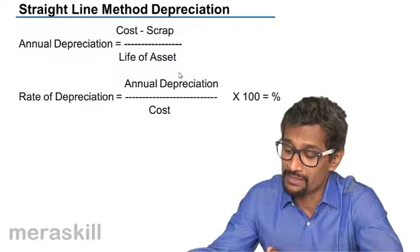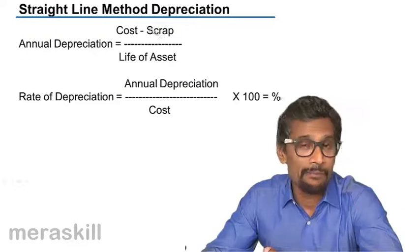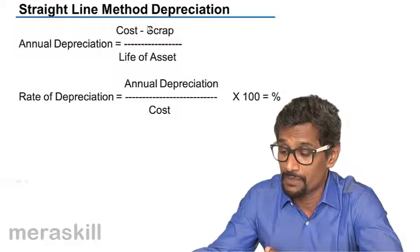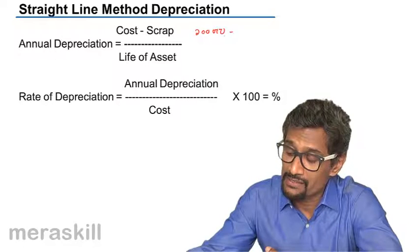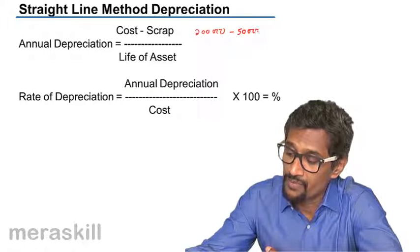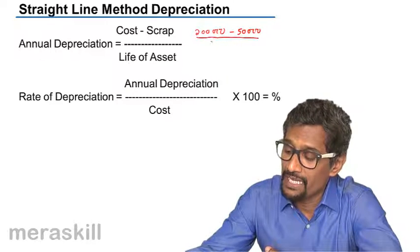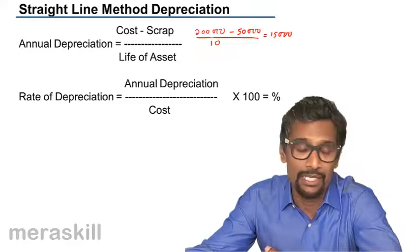So what do we have in the straight line method? Annual depreciation is cost minus scrap. As we did in the example, cost was 2 lakh minus scrap value was 50,000 upon the life of the asset was 10 years, which worked out to be 15,000 is the annual depreciation, that is average depreciation per year.